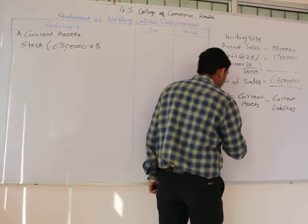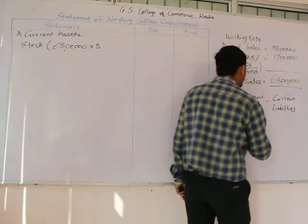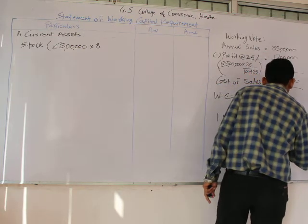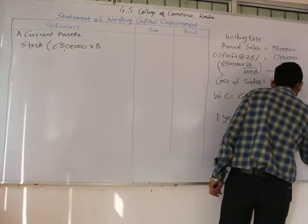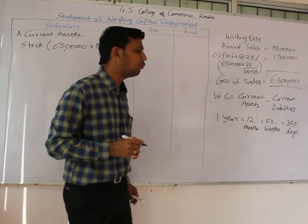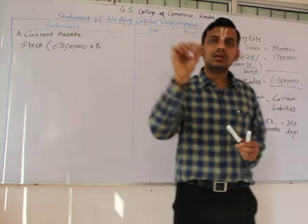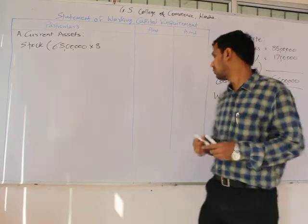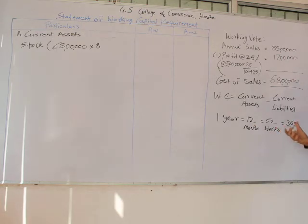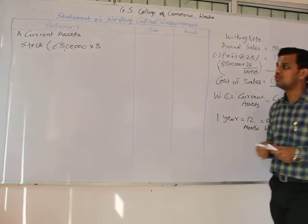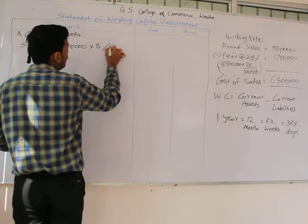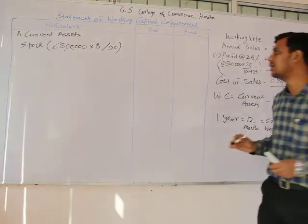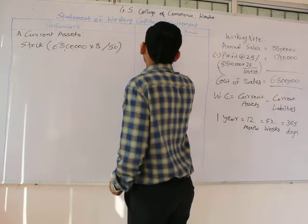Working capital information is usually given with regard to the year — one year equals 12 months, equals 52 weeks, or equals 365 days. Whatever unit is given in the question, we follow that unit. For this particular question, it is stated that there are 50 working weeks. So we divide by 50. Therefore, 68 lakhs × 8 ÷ 50 gives us 10,88,000.